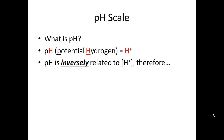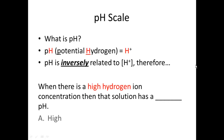pH is inversely related to hydrogen ion concentration — those brackets mean concentration or amount. So pH is not directly, but inversely related to the amount of hydrogen present. Therefore, a high hydrogen ion concentration means a low pH.